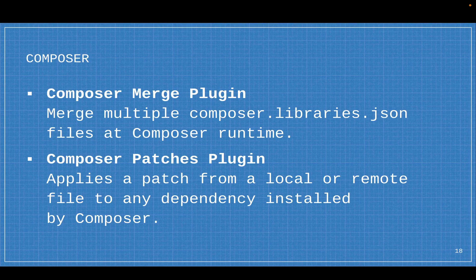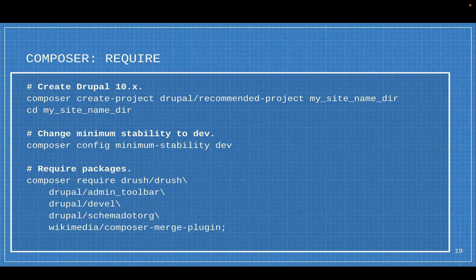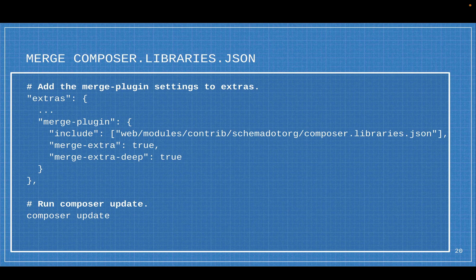Let's start installing. I want to call out the Composer Merge plugin, which allows us to not have all the dependencies in the main composer file, but to move them into a composer.libraries.json file that you can at runtime say I want to pull in all these dependencies from this file, or you can copy those dependencies — you don't have to use the Composer Libraries file. It's a good way to isolate those decisions. The patches plugin — you're going to see in the library some patches. That's included in core, but I wanted to call it out when you see the libraries file with patches. So we're going to create a Drupal site using Composer, change the minimum stability to dev because the module is in alpha, require some packages, get the Composer Merge plugin installed, define the Composer Merge plugin settings, and then run Composer update.